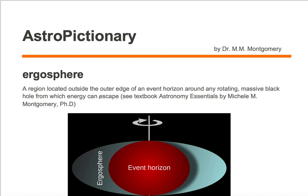An ergosphere is a region located outside the outer edge of an event horizon around any rotating massive black hole from which energy can escape.